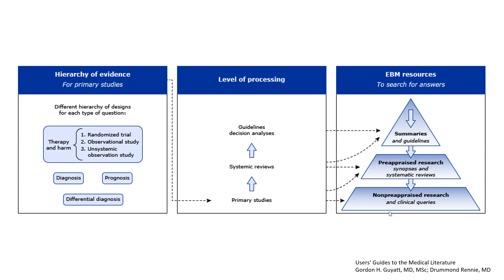Non-pre-appraised research — individual independent observational studies and independent randomized control trials — forms the base. Whenever we look for an answer to a particular clinical question, we always go to the best evidence available: either a summary, a guideline, or a review article. The next best thing is pre-appraised research, which is synopsis and systematic reviews. This highlights that systematic reviews come relatively higher up in the evidence pyramid.